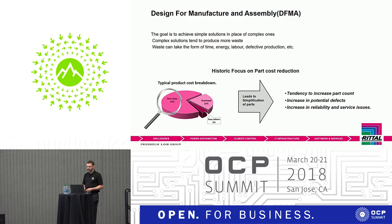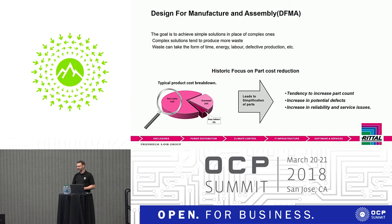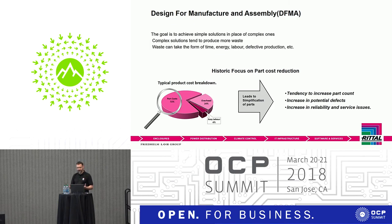So how does design for manufacture come into this? It's quite a simple process — some would say very common sense — but what's common to one isn't to somebody else and it's easy to overlook certain aspects. DFMA — design for manufacturing and assembly — the goal is to achieve simple solutions in place of complex ones. Complex solutions tend to produce more waste in the form of time, energy, labour, and potentially defective parts.